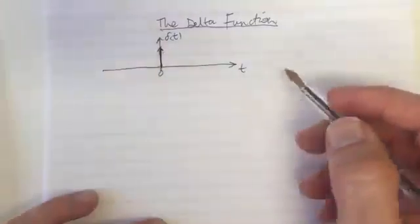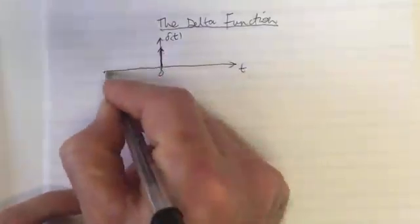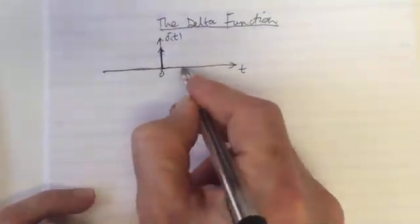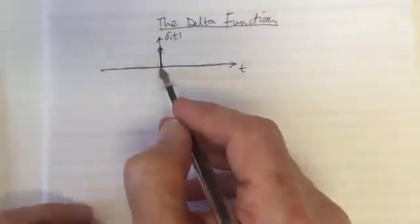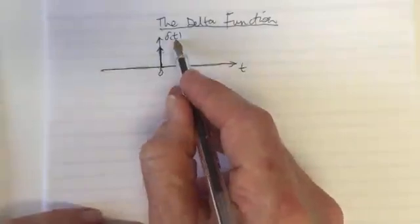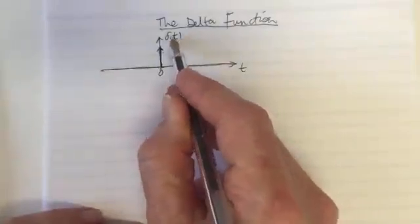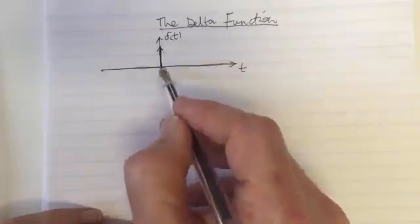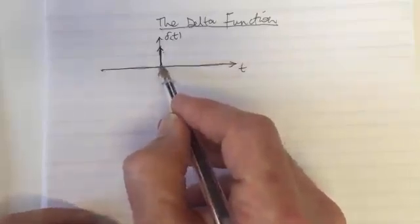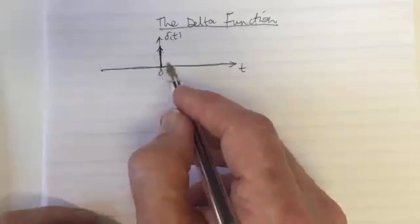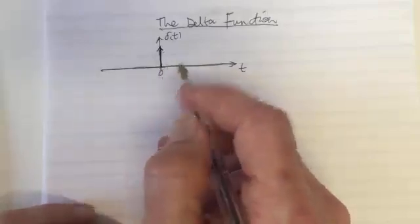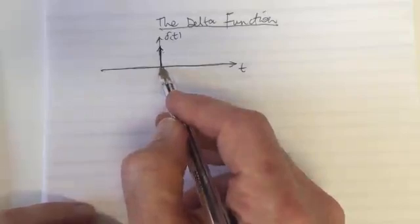I'm going to give a summary of the delta function. The delta function is an idealized function that is zero everywhere except at the center — in this case, at zero. It's infinitely narrow but also infinitely high, and the ratio is such that the area equals one. It's an idealized function where the area equals one even though it's infinitesimally narrow.